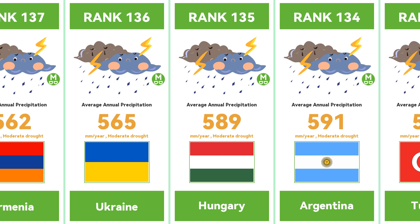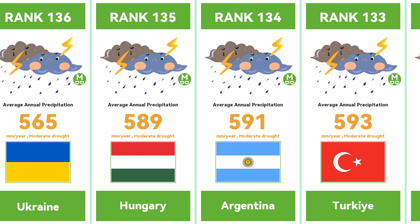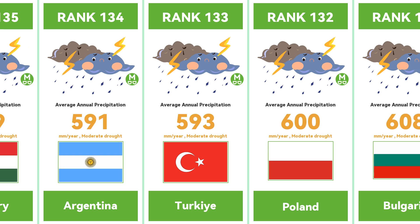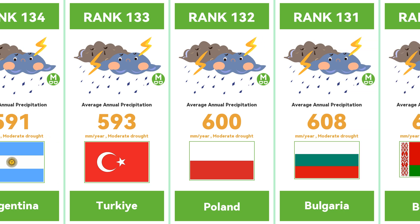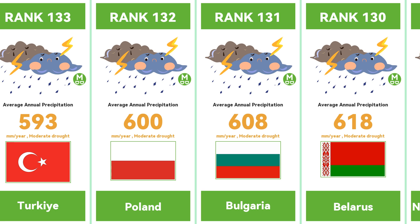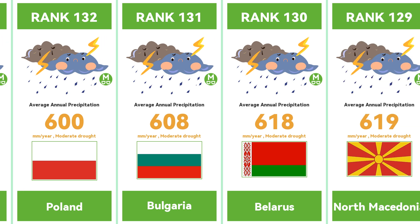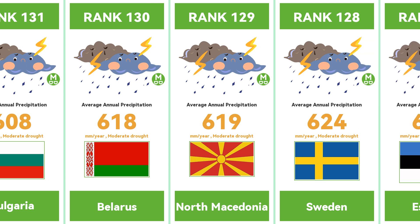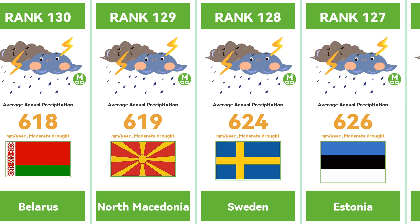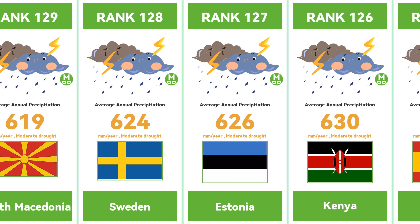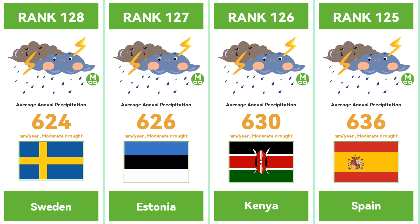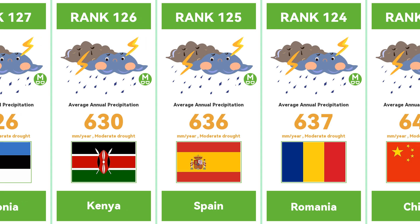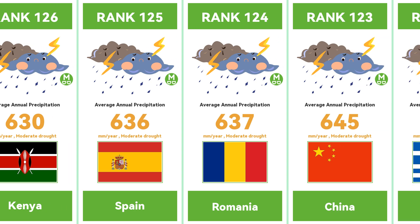The difference in annual average rainfall has a significant impact on various aspects of a country. Countries in high rainfall areas often face challenges such as floods and soil erosion, and measures need to be taken to adapt to this humid environment. Countries in arid regions need to take appropriate measures to address water scarcity and drought, including effective planning of water-saving measures, improvement of irrigation technology, and water resource management.